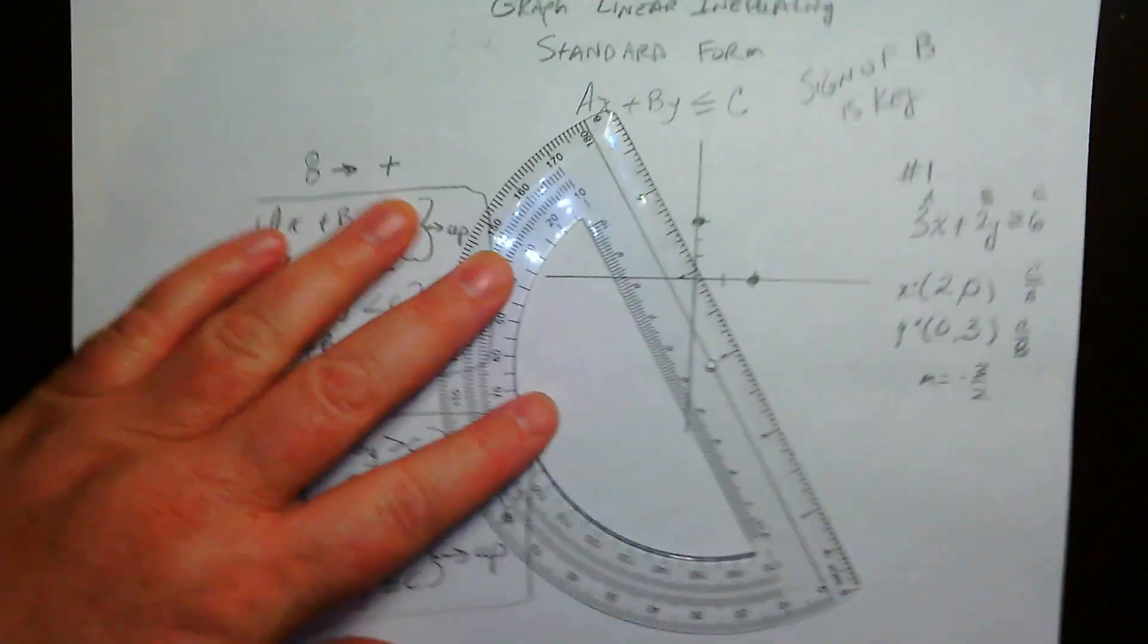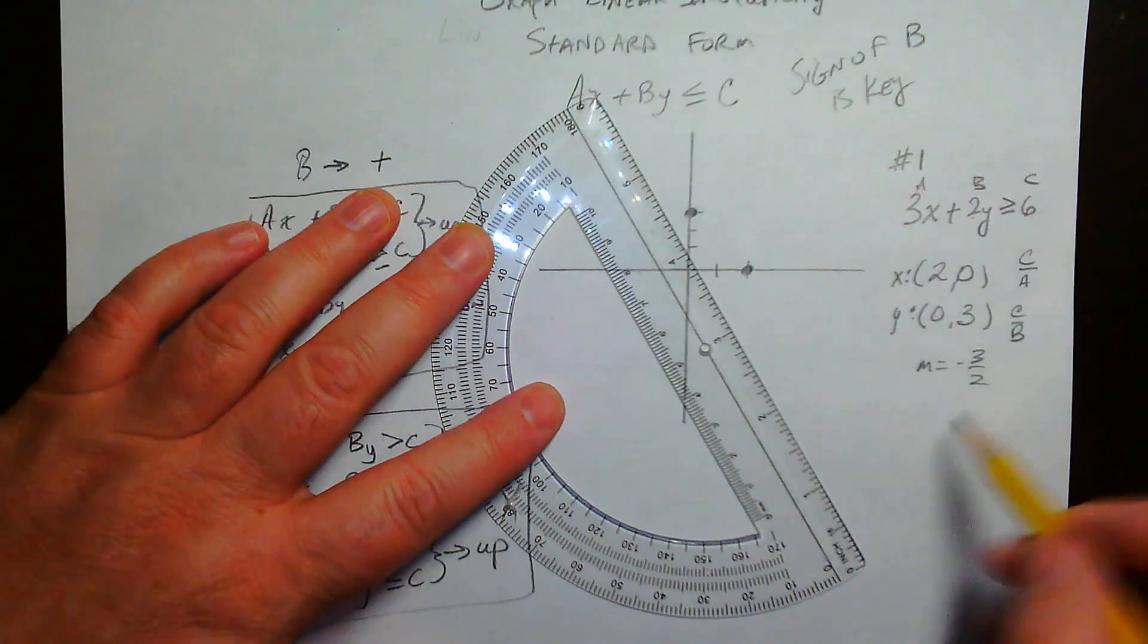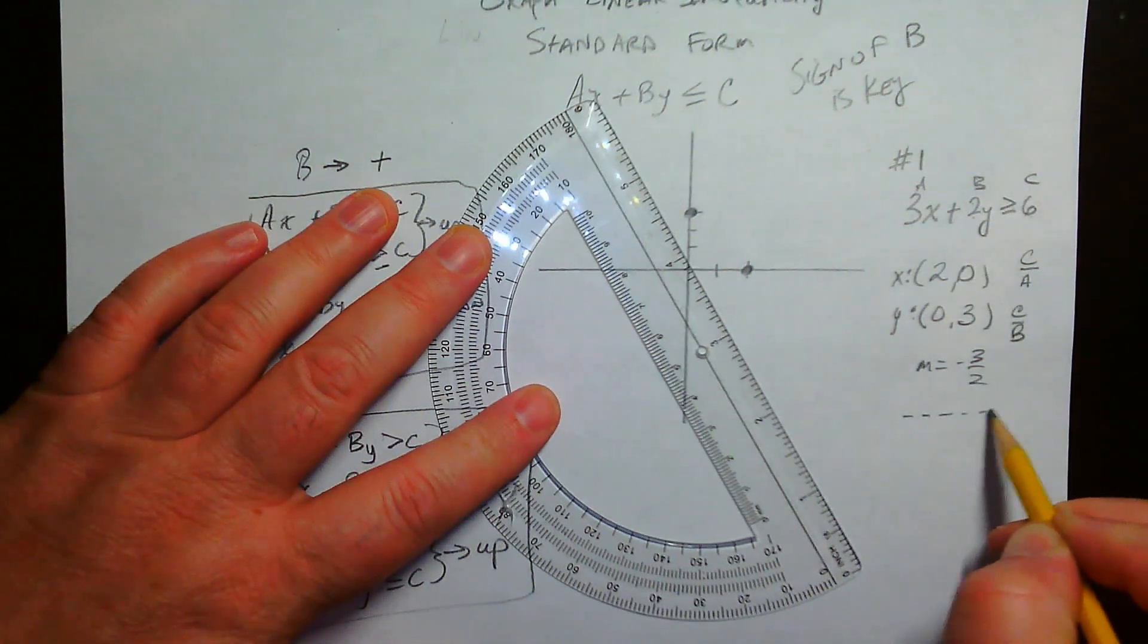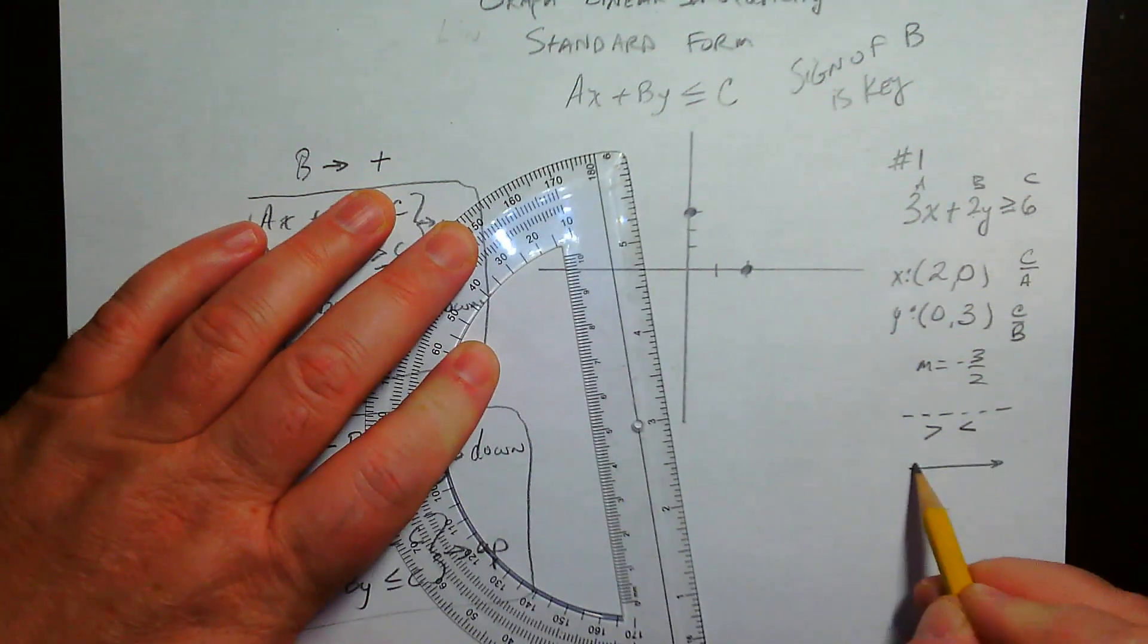But now, what we've got to do is we've got to figure out two things. We've got to figure out which kind of line is it. Is it going to be a dotted line? Those come from strict inequalities. Or is there going to be a solid line, which is or equal to?